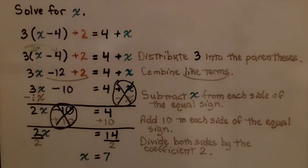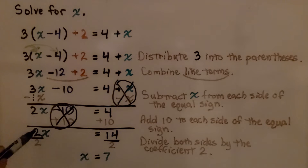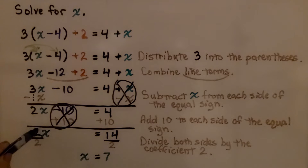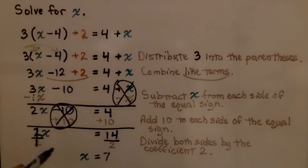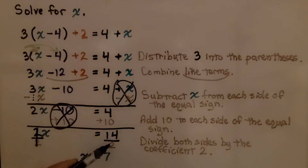Now we divide both sides by the coefficient 2. 2 over 2 is 1, same numerator and denominator, so we have 1x. And 14 divided by 2 is 7. We know x is equal to 7.